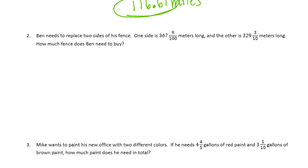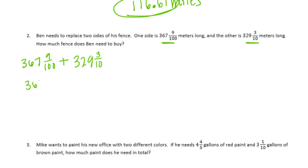Number 2. Ben needs to replace two sides of his fence. One side is 367 and 9 hundredths meters long, and the other is 329 and 3 tenths meters long. How much fence does Ben need to buy? He's replacing two sides — this side and this side — and we want to know how much they are together. So we're going to be adding 367 and 9 hundredths plus 329 and 3 tenths. I like this problem because they're already in hundredths and tenths, so I'll just go ahead and put a zero in the hundredths place.